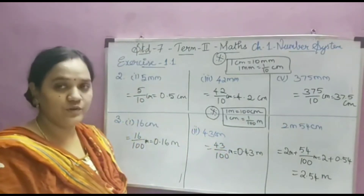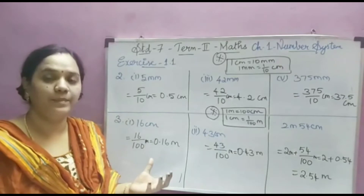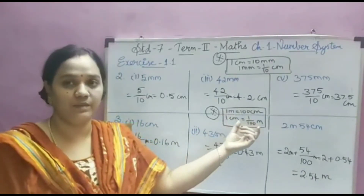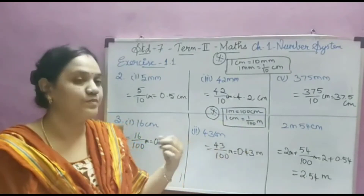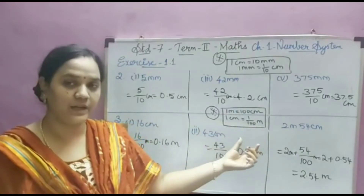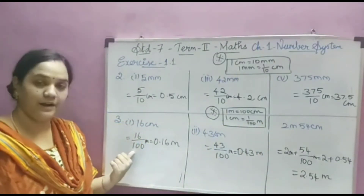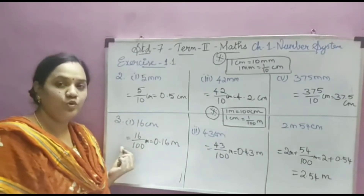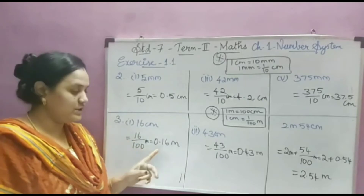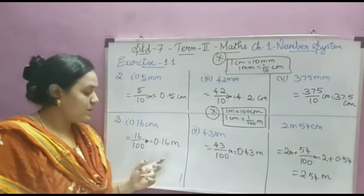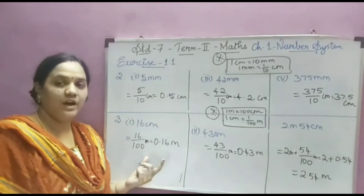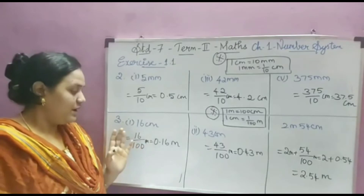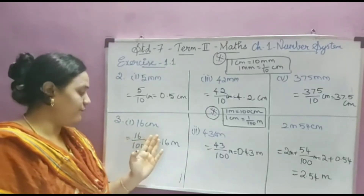Express the following in meters using decimals. We are going to convert the given numbers — given in centimeters — to meters. So 1 meter is 100 centimeters, and 1 centimeter equals 1/100 meter. So while converting centimeters to meters, we have to divide by 100. I am dividing 16 by 100 — there are 2 zeros in 100, so I keep the point before 2 digits. My answer is 0.16. Remember: when keeping the decimal point, count the digits from the last digit, not the first.